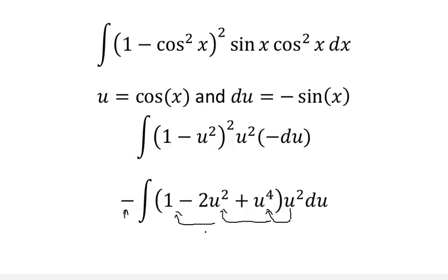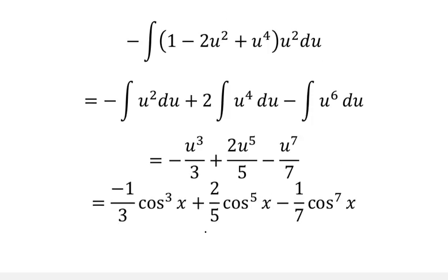We multiply u squared through to get three integrals: the integral of u squared, the integral of u to the fourth, and the integral of u to the sixth. Notice we bring the negative across each of these. By the power rule: u squared gives u cubed over 3, u to the fourth gives u to the fifth over 5 times 2, and u to the sixth gives u to the seventh over 7, times negative 1.